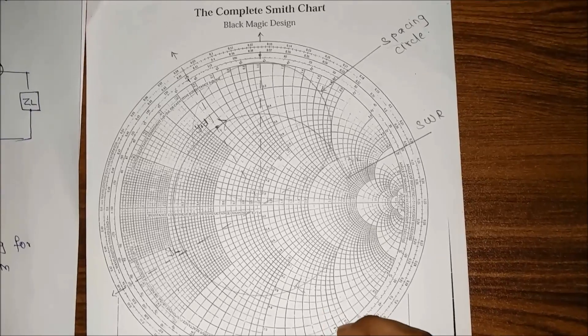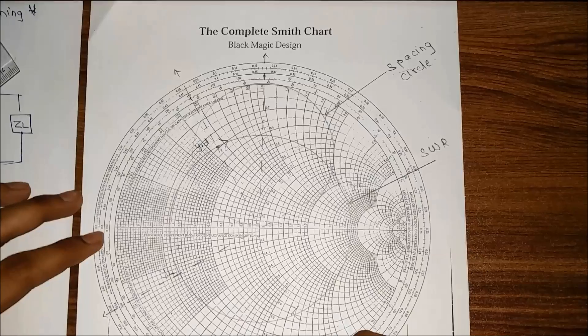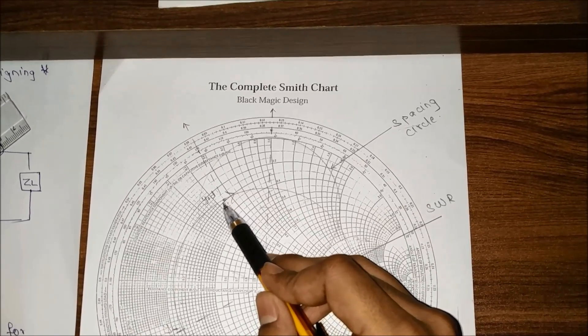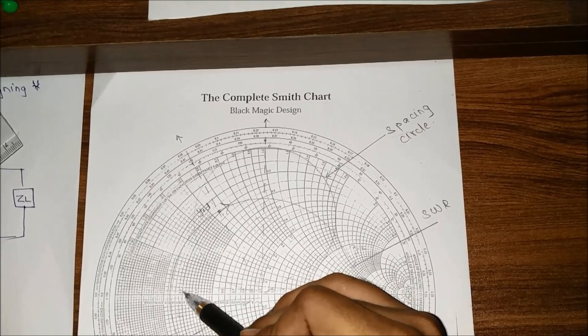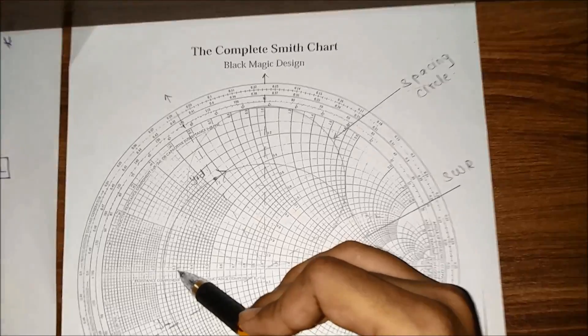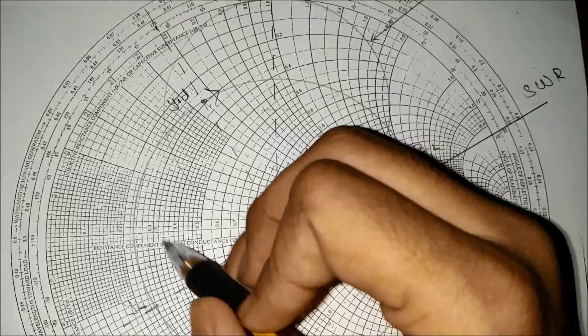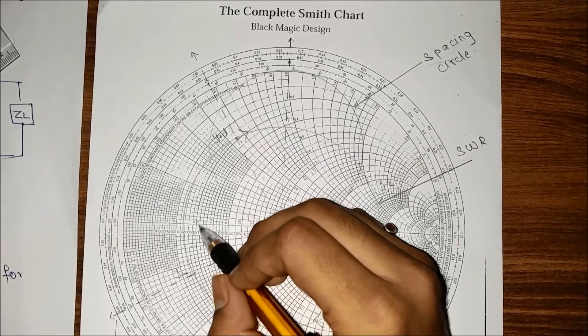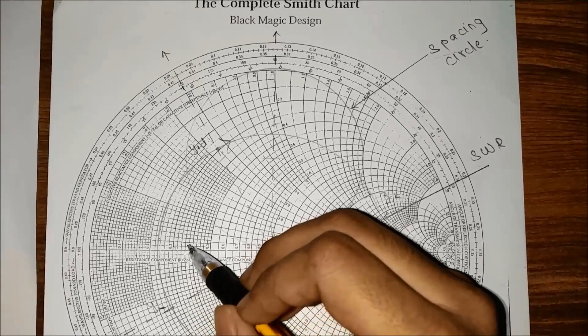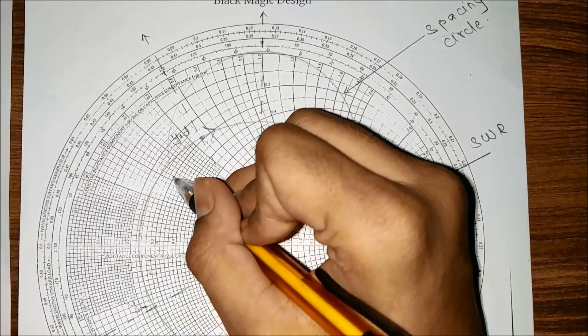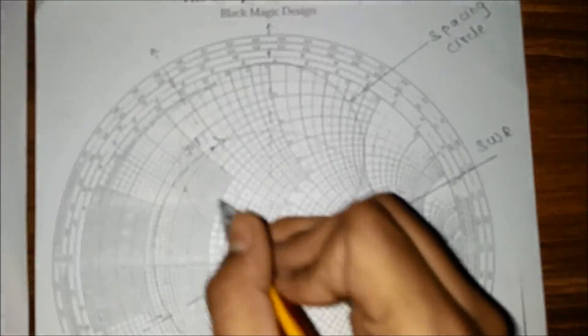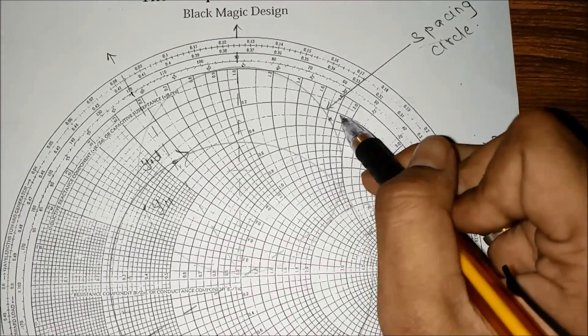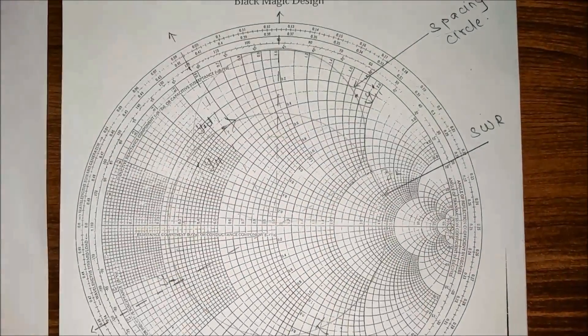Now we need to plot y11 and y11 dash. Check where y1d cuts the real axis - it comes down over here at point 3. Two points of the spacing circle intersecting with point 3 circle will give y11 and y11 dash. The first point cutting the spacing circle is y11, and as we move ahead it cuts over here - that is y11 dash.